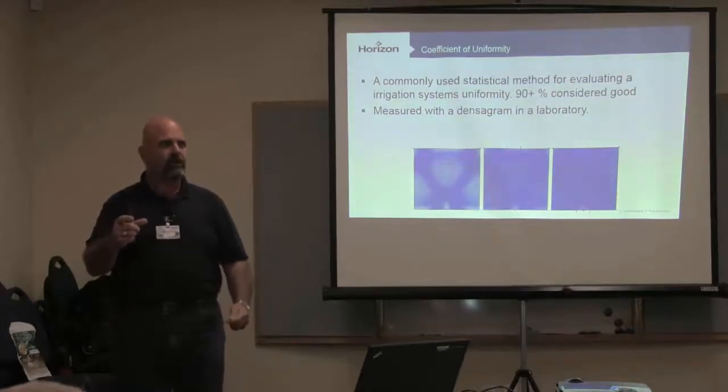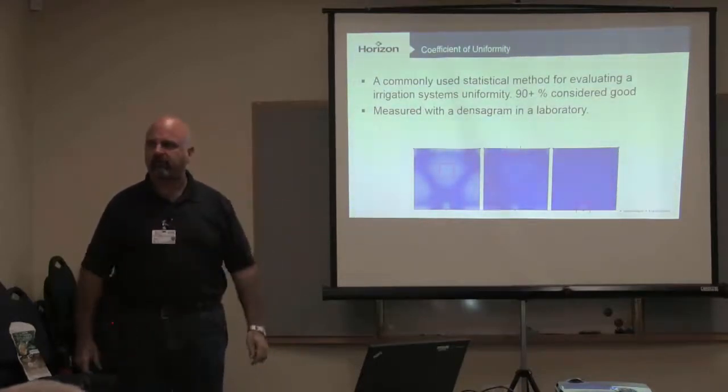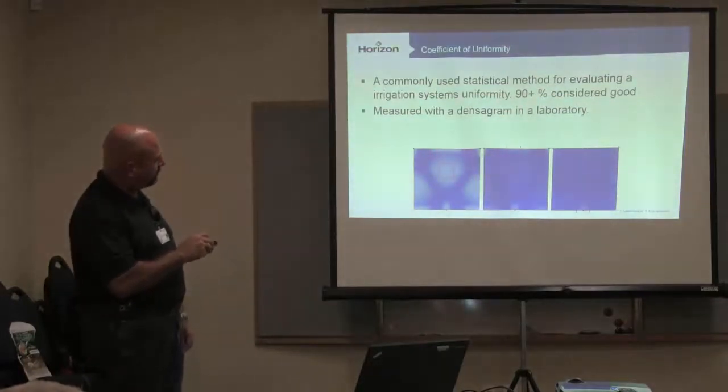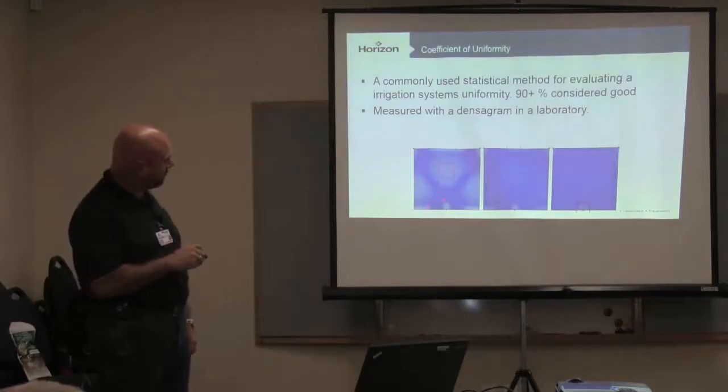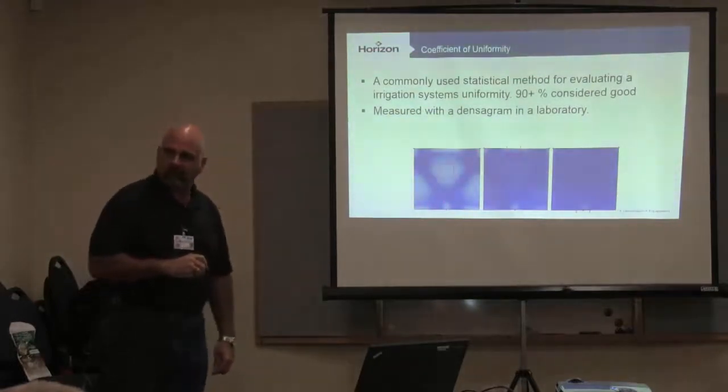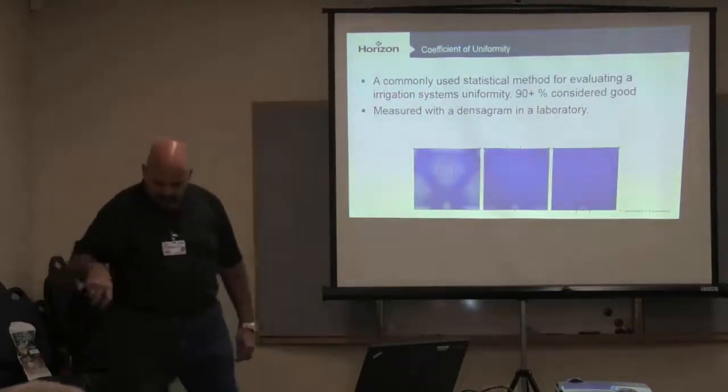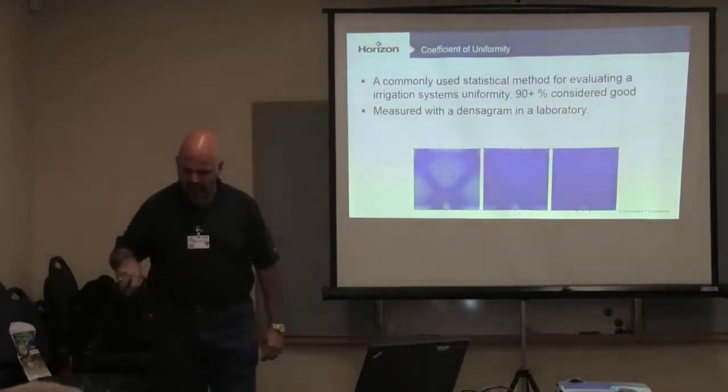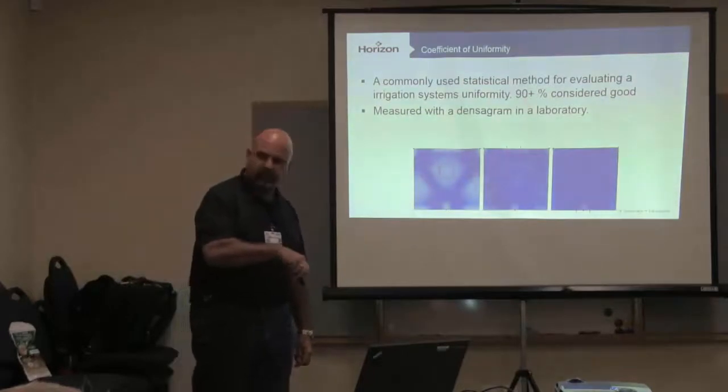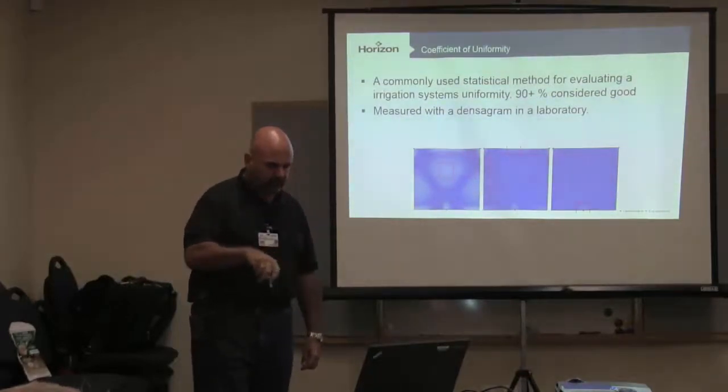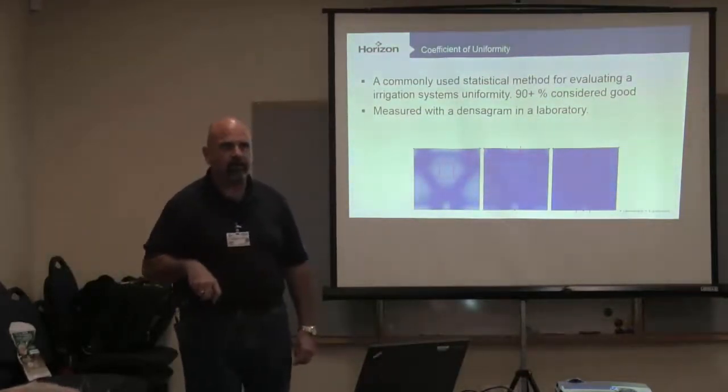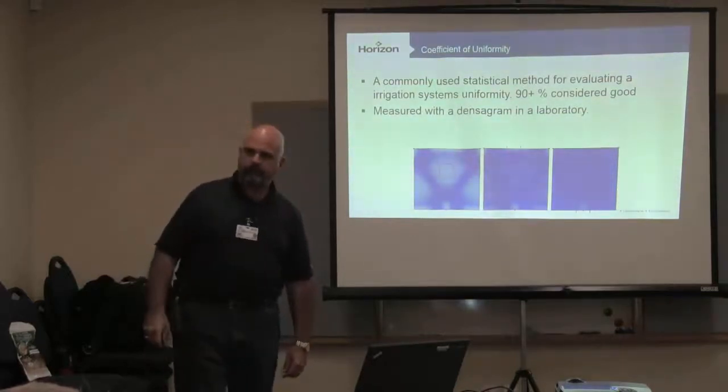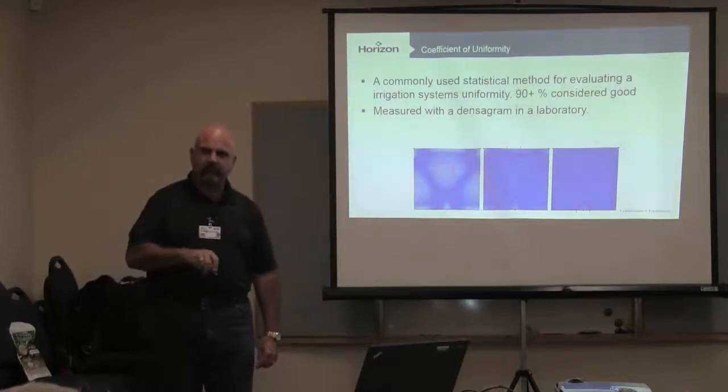What happens if every single head has a number 7 nozzle in it? So this corner has a number 7, this corner has a number 7, and this corner has a number 7. If we've got a number 7 nozzle here that's a quarter spray, a number 7 there that's a half spray, and a number 7 there that's a full spray, what's the problem with that?